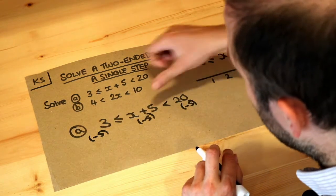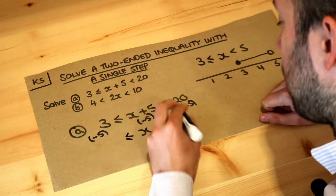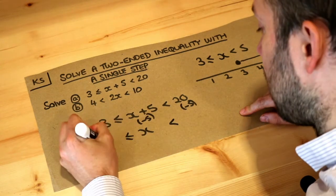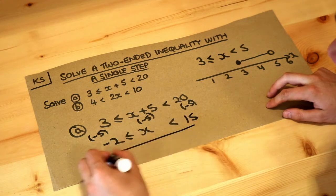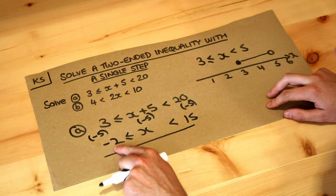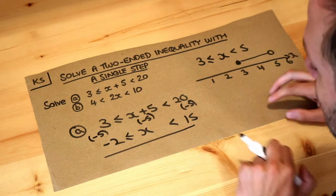So if we subtract 5 from the middle, we're just left with x, and let's copy these symbols here, that's less equal to, that's less than, 3 minus 5 is negative 2, and 20 minus 5 is 15. So we've worked out that x is between minus 2 and 15, it's allowed to include minus 2, but it doesn't include 15.